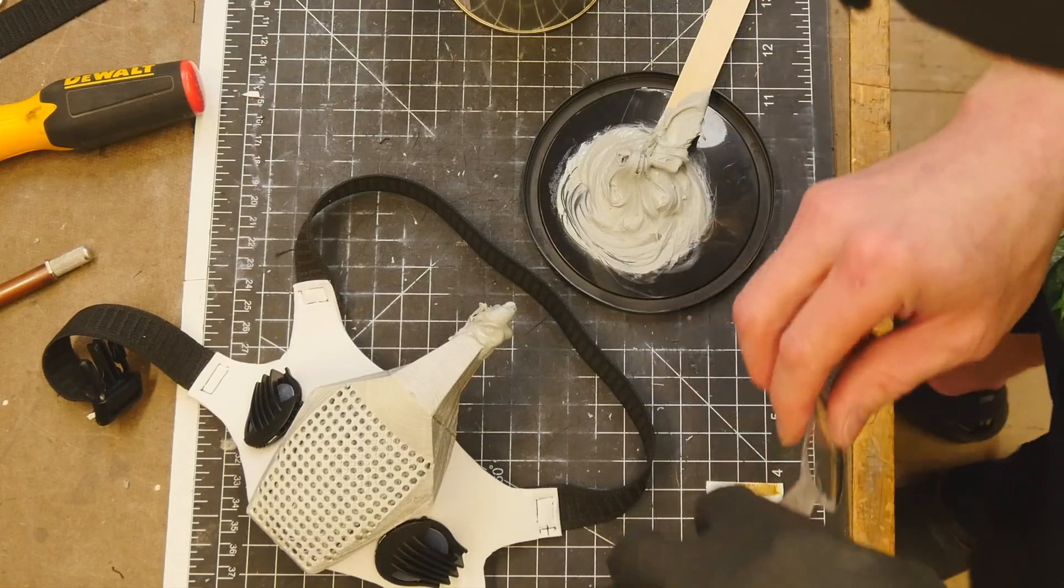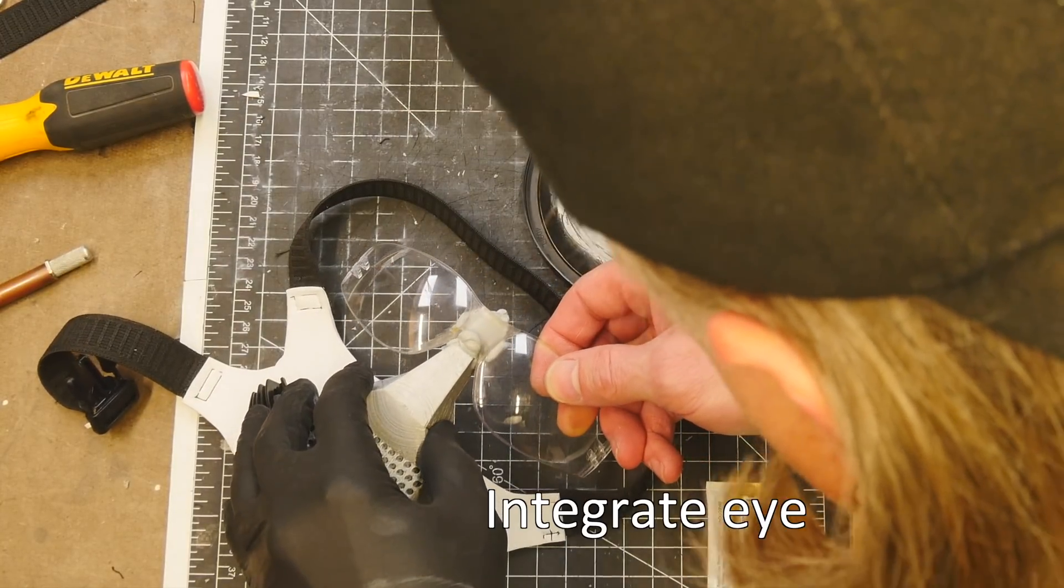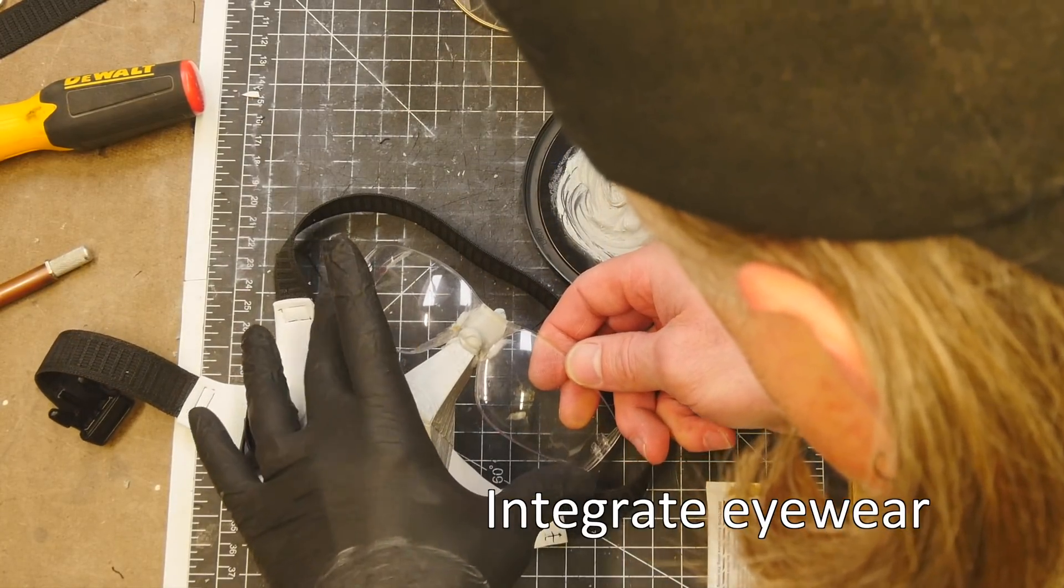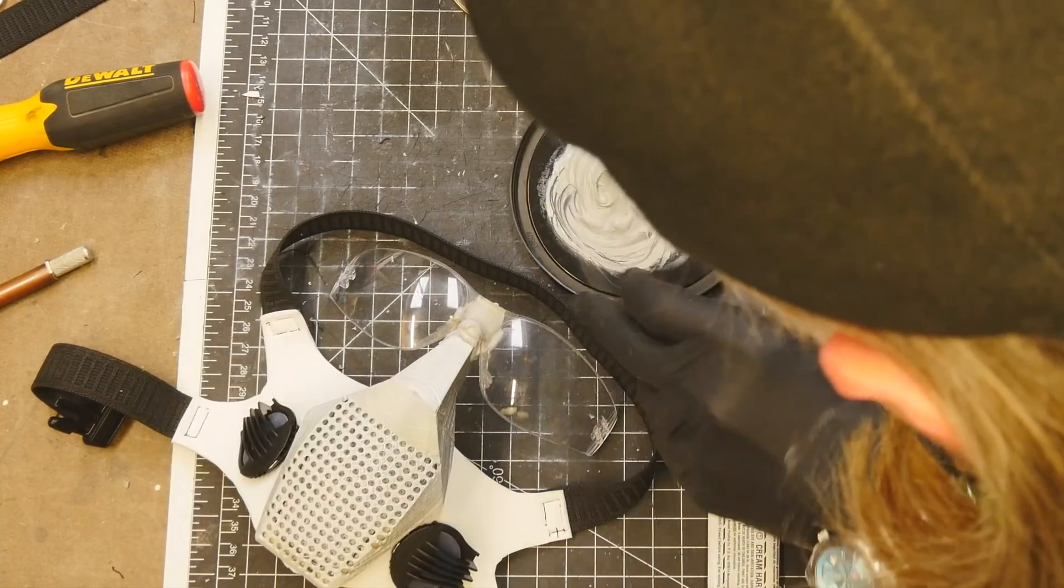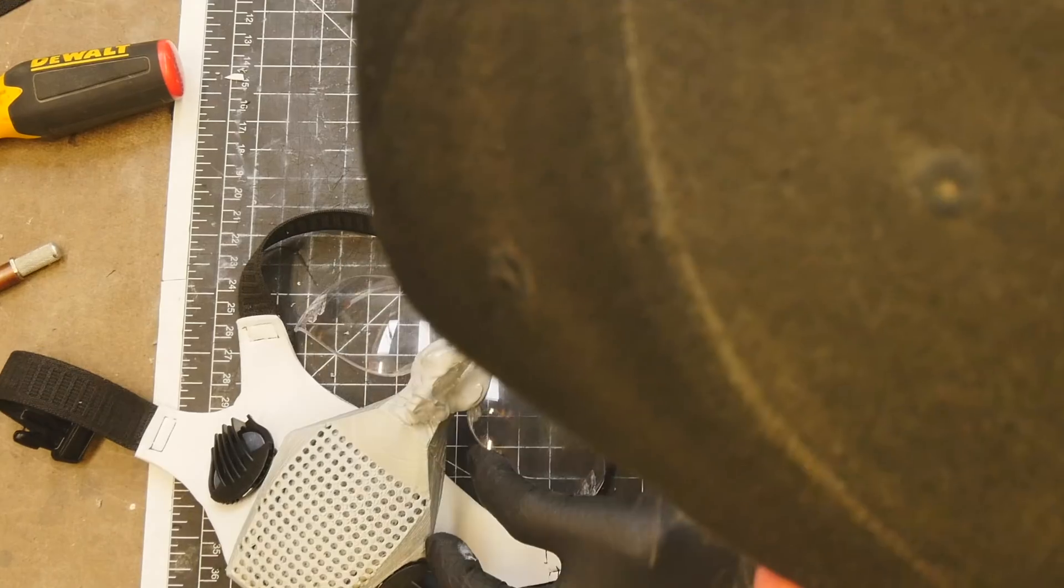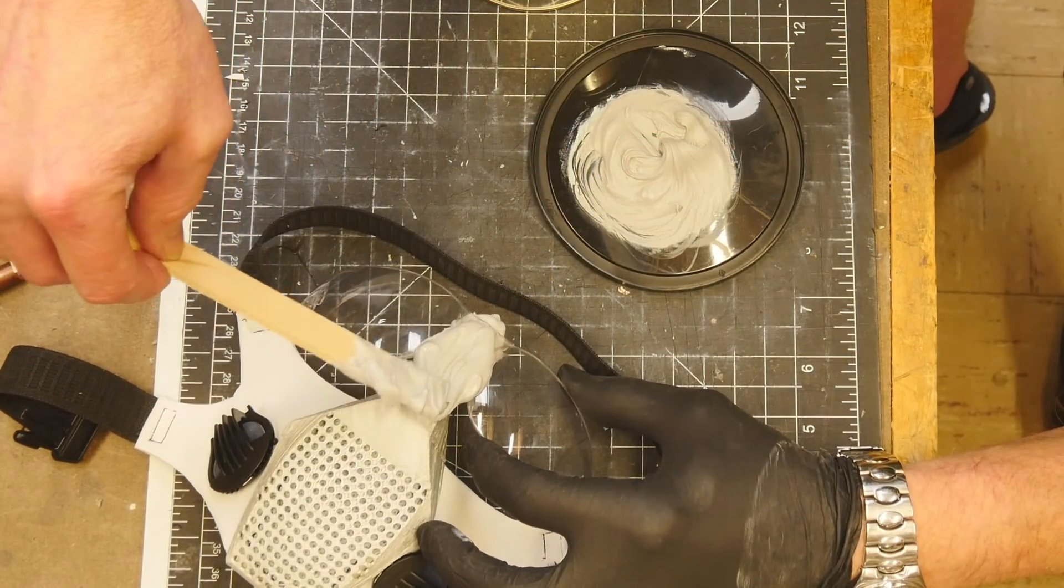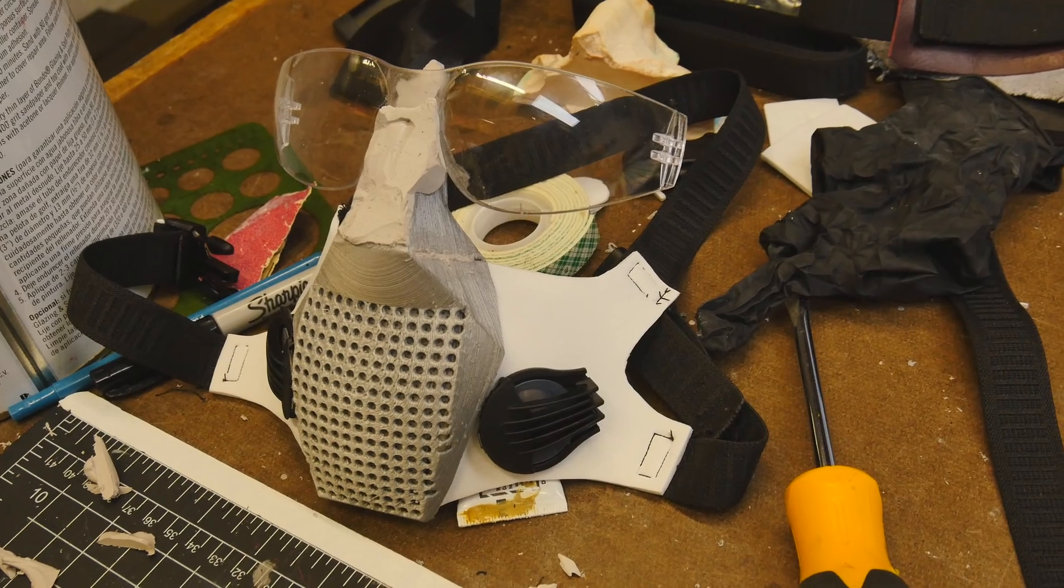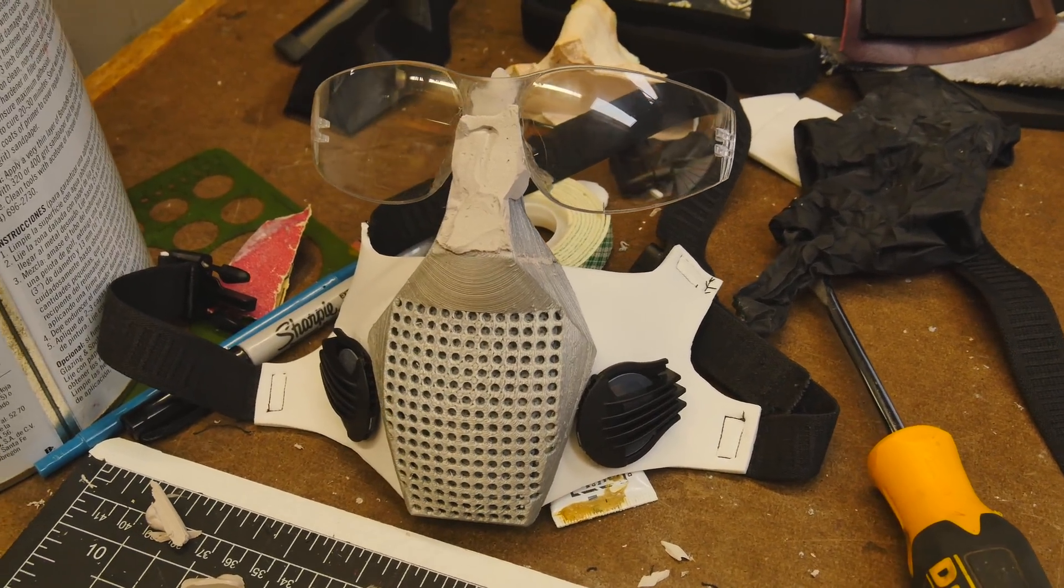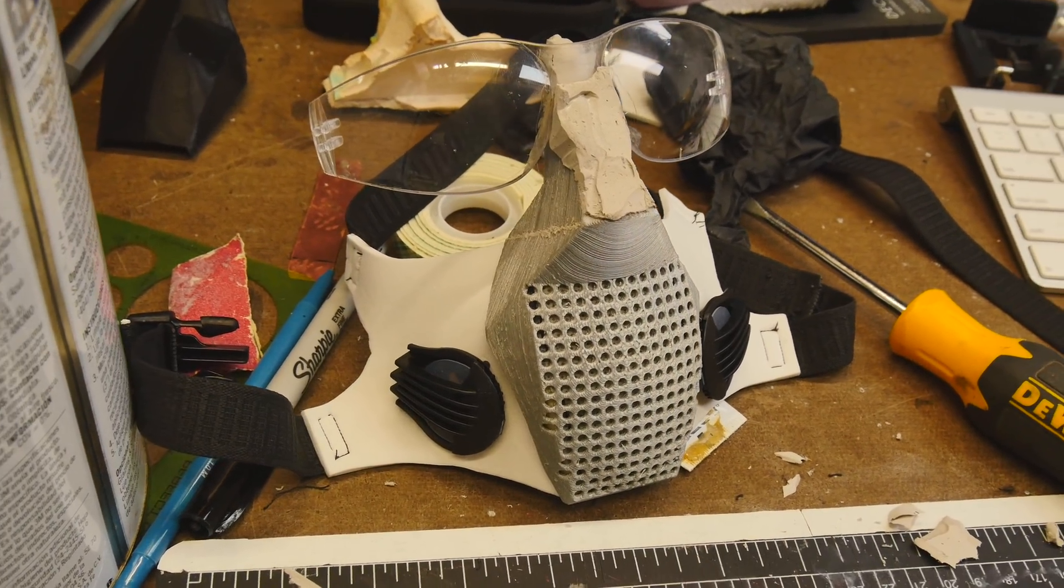Let's work with some Bondo, some polyester body filler, to attach the eyewear to the nose bridge part, very much the same way that we built the proof of concept. Basically using the glasses as a guide or a squeeze.